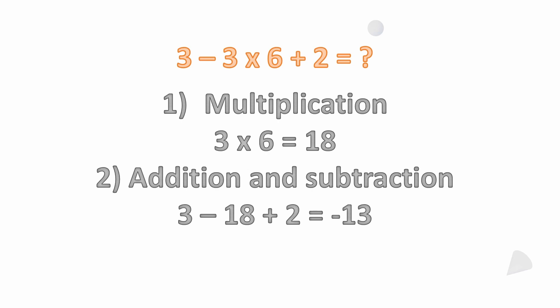So in this case, I'm fine saying 3 times 6 is 18 as long as I remember that I am subtracting it in the equation. You've got to keep track of the signs. So number one, multiplication. Number two, addition and subtraction left to right. So I have 3 minus 18 plus 2 equals minus 13.